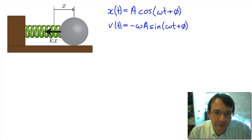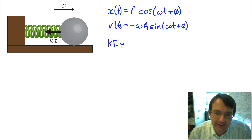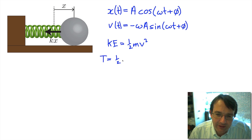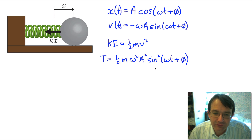Here we have our mass-spring system. We know the displacement and we can find the velocity by differentiating the displacement with respect to time, which we've done before, and we got this expression. Now we're asking ourselves: what is the kinetic energy? The kinetic energy, at least in Newtonian mechanics, is a half mv squared. So, using the symbol T that we often use for kinetic energy, we have T = ½mω²a²sin²(ωt + φ). This is our expression for the kinetic energy as a function of time.